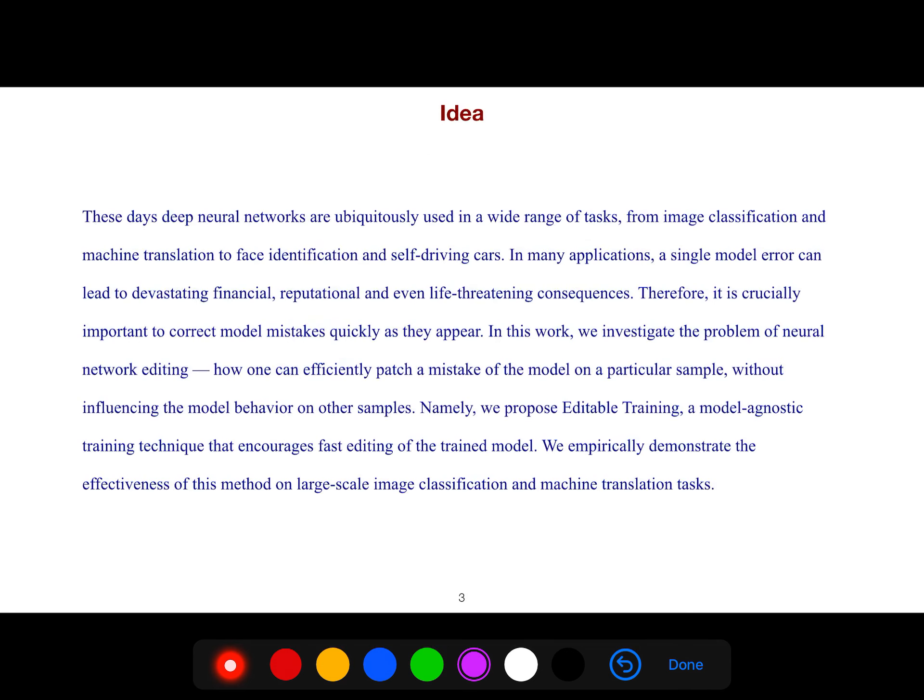These days, deep neural networks are ubiquitously used in a wide range of tasks, from image classification and machine translation to face identification and self-driving cars. In many applications, a single model error can lead to devastating financial, reputational and even life-threatening consequences. Therefore, it is crucially important to correct model mistakes quickly as they appear.